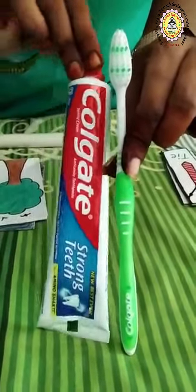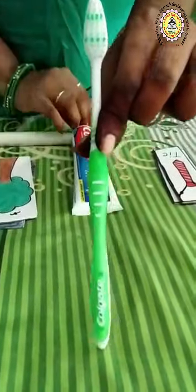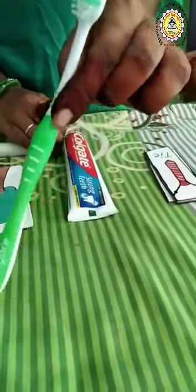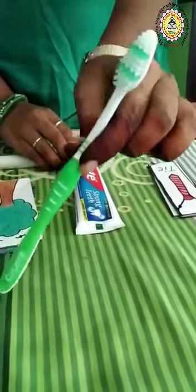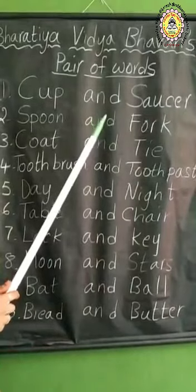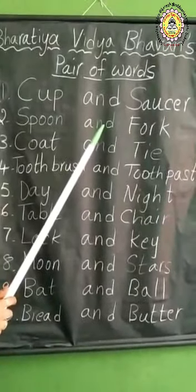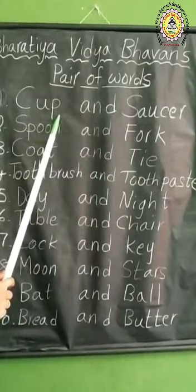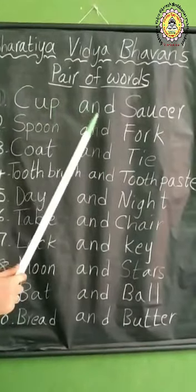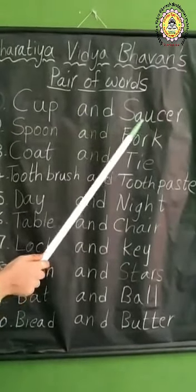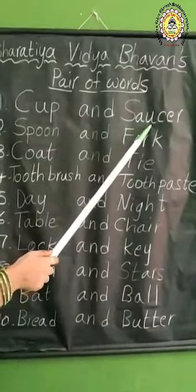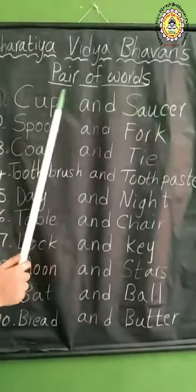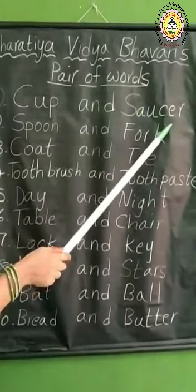You have to brush your teeth twice a day — morning and at night also you have to brush your teeth. Let us spell these words, children. Spell along with me: C-U-P. Cup. Cup and saucer. S-A-U-C-E-R. Saucer. Cup and saucer.